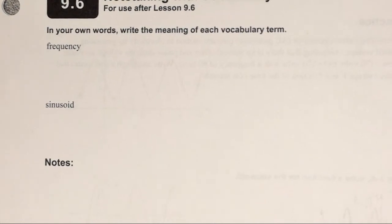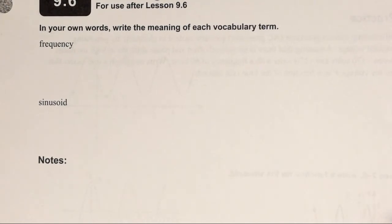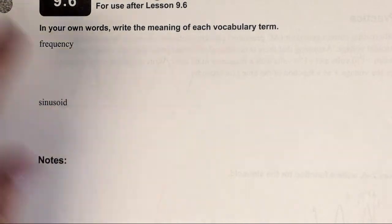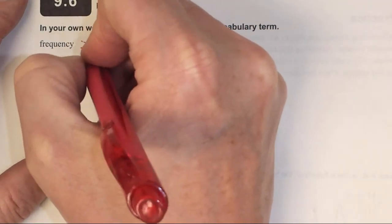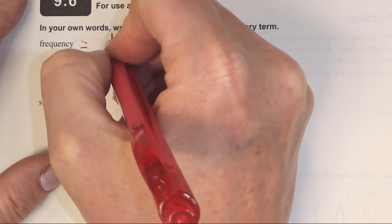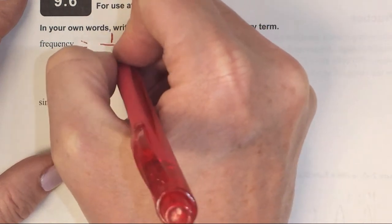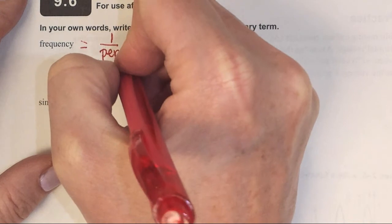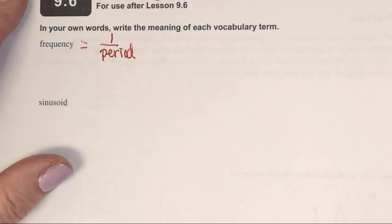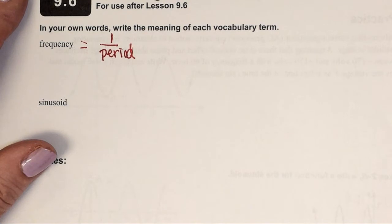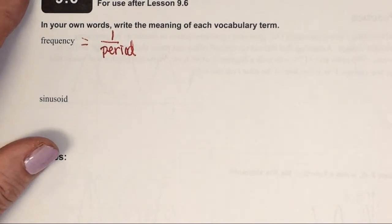First of all, it's asking us for the definition of frequency. Frequency is one divided by the period, that's always going to equal the frequency.